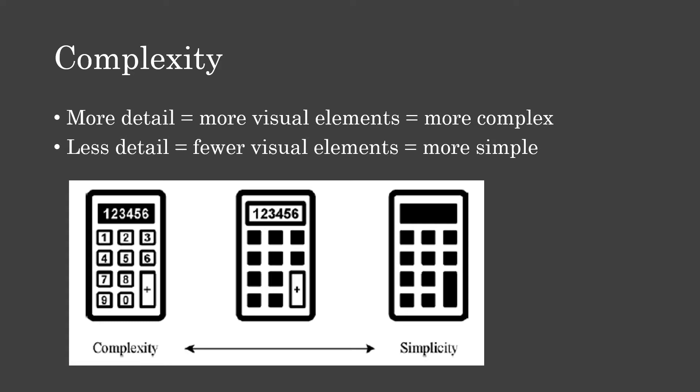Looking at three calculator examples: the one on the far left is the most complex — it has the most details, all the numbers, and a plus sign. The far right rendition is the most simple, with the least amount of visual elements and probably a little more abstract. The center one is a bit of both — a plus sign and some numbers in the display screen, but the keypad numbers are still just black rectangles. As the designer, you're working on a spectrum deciding how much visual information your viewer needs to correctly identify the element and perform the required task.